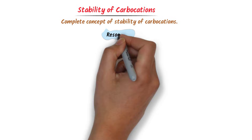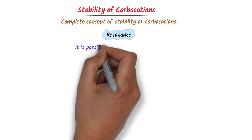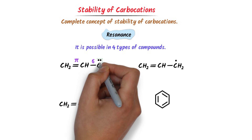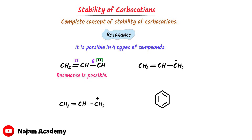The first concept is resonance. Without it, you will not be able to learn stability of carbocations. We already learned the concept of resonance. It is possible in four types of compounds. In the first case, there is a pi bond, sigma bond and lone pair of electrons. Hence, resonance is possible in it.